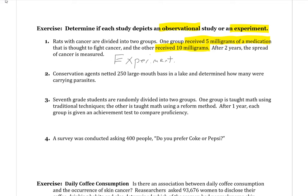Second: conservation agents netted 250 largemouth bass in a lake and determined how many were carrying parasites. Even though they netted 250 bass, they simply gathered them and determined how many carried parasites — nothing was done to them, they were just observed and tested to see if they have parasites. There's nothing saying they gave parasites to some bass or changed things in the lake. They just saw how many had parasites, so this is simply an observation.